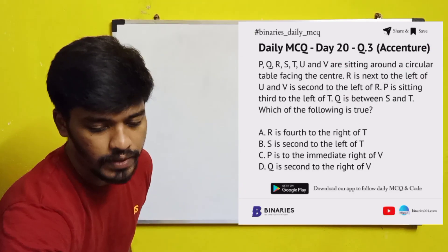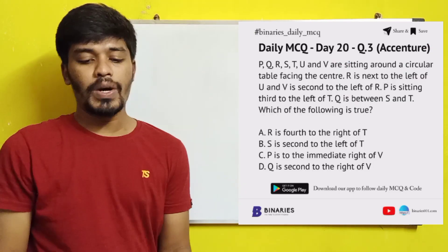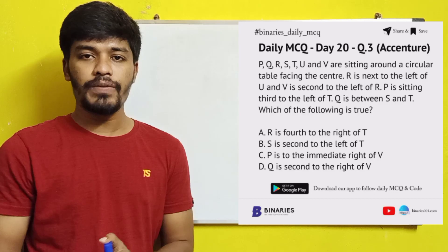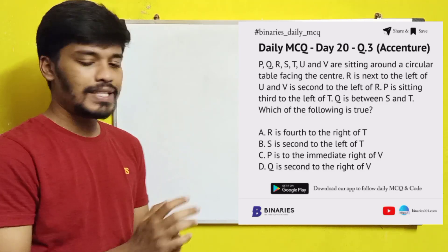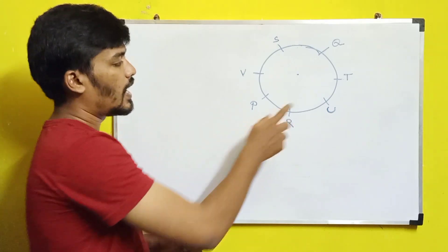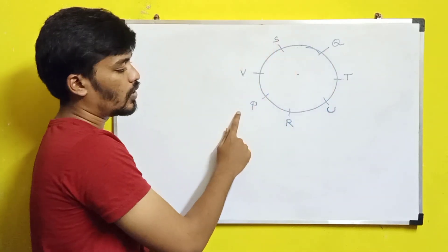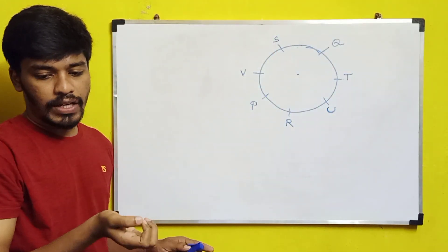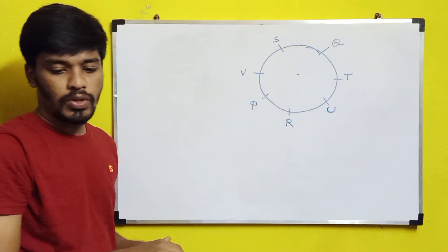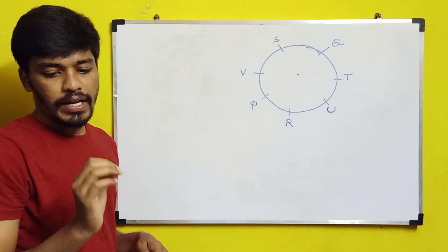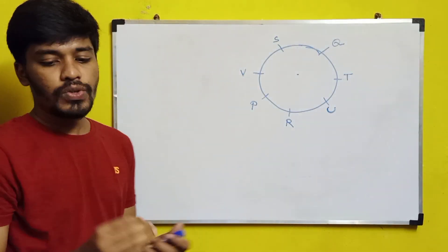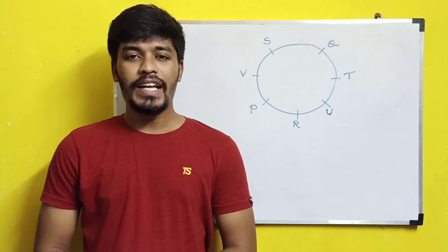For the third question: which of the following is true? Option A — R is fourth to the right of T — counting four positions to T's right does not give R, so this is wrong. Option B — S is second to the left of T — counting two positions to T's left does not give S, so this is also wrong. Option C — P is to the immediate right of V — yes, this condition is satisfied. So the third option is the correct answer.